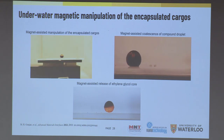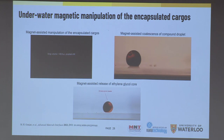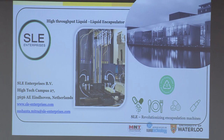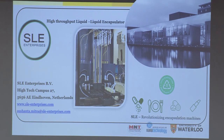You can move them around, coalesce them together, and release at will based on different magnetic field strengths — various interesting applications. We created a startup called SLE Enterprises BV, a Dutch startup in Eindhoven, the birthplace of Philips. We built an MVP machine with four nozzles and cuvettes containing canola oil. A separate nozzle sucks out the interfacial layer so it can be reused. With four nozzles we can achieve a throughput of close to 230,000 encapsulations per hour — a highly scalable system.